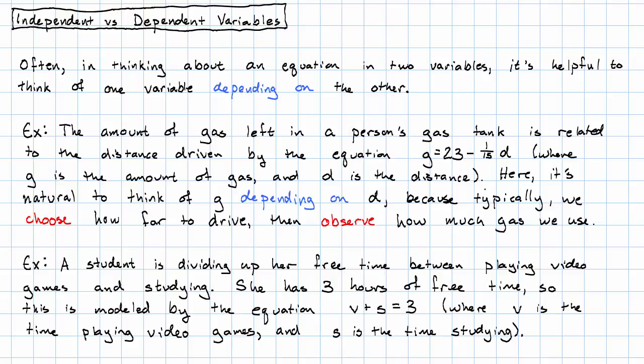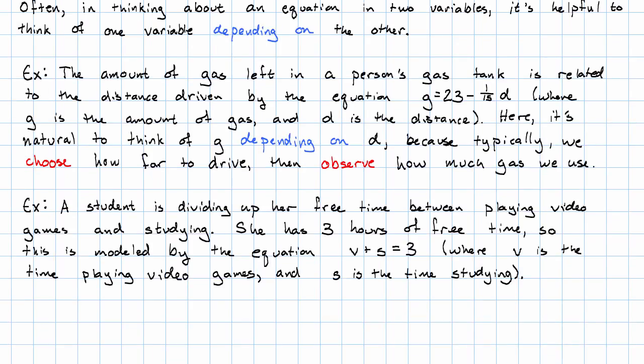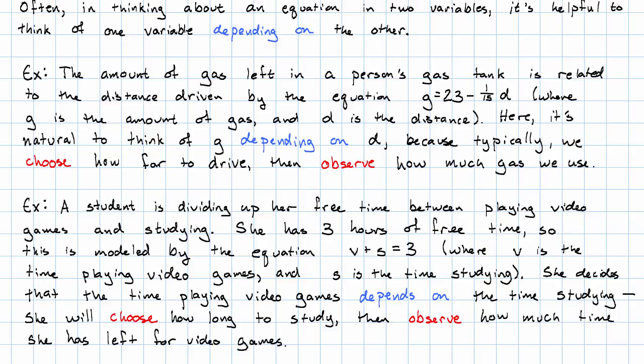Now, there's no obvious choice of which value depends on the other. But we can arbitrarily decide that the time playing video games will depend on the time studying. That is, she will choose how long to spend studying, then observe how much time she has left for video games.